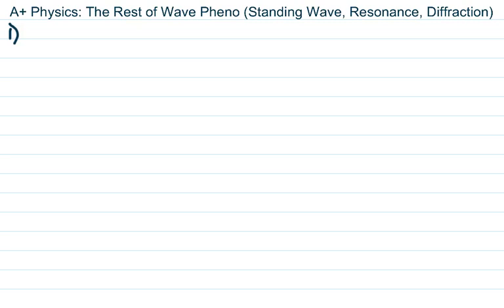The first question makes reference to a standing wave. A standing wave is called that because it doesn't go anywhere — a traveling wave actually travels through the medium, but a standing wave doesn't. To make a standing wave you need two moving periodic waves — not just one pulse but a series of pulses.